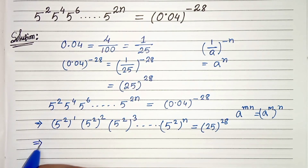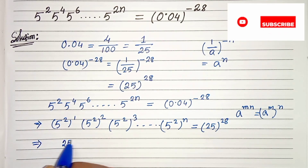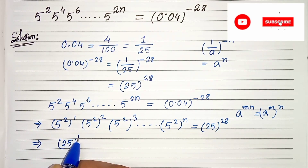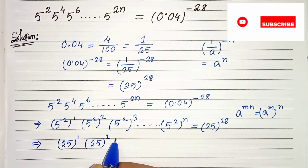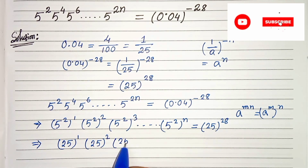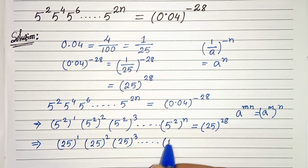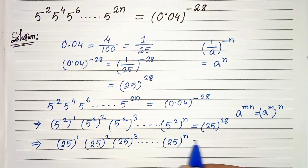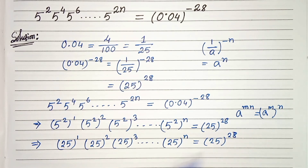Now in the next step, 5 squared is 25, so we have 25 whole to the power 1, times 25 whole to the power 2, times 25 whole to the power 3, and so on, times 25 whole to the power n, equals 25 whole to the power 28.